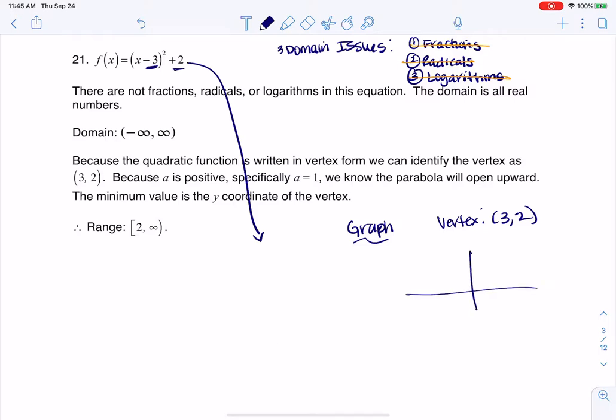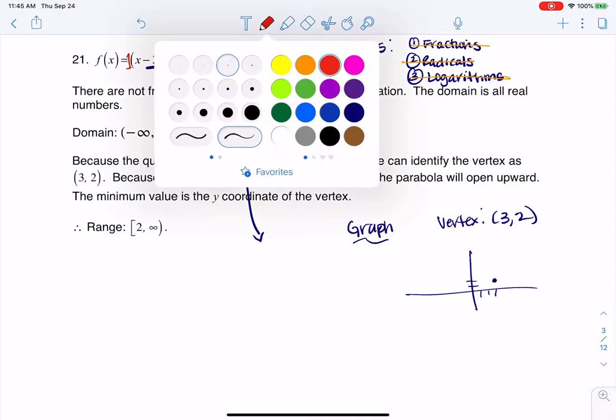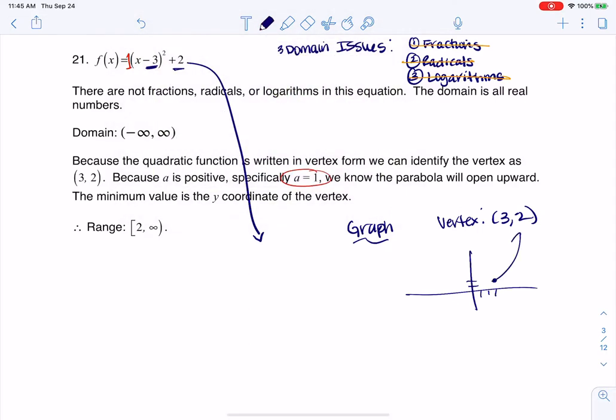So basically, if I was going to do a quick and dirty graph, I have (3, 2), and because there's secretly a secret 1 as the coefficient, the big thing there is that that a value is positive.